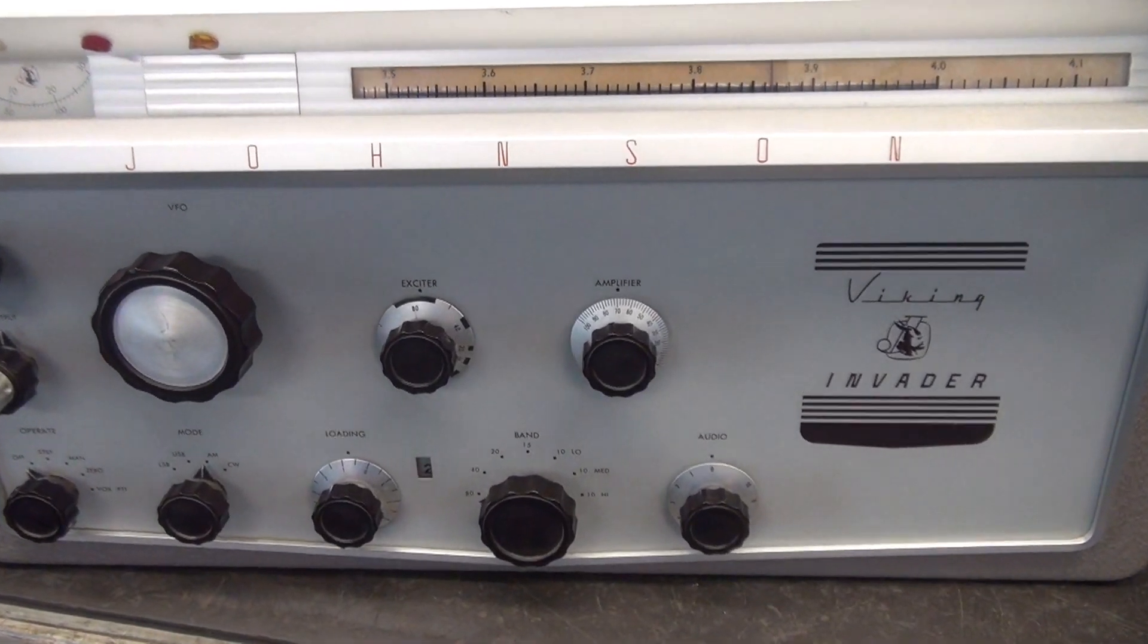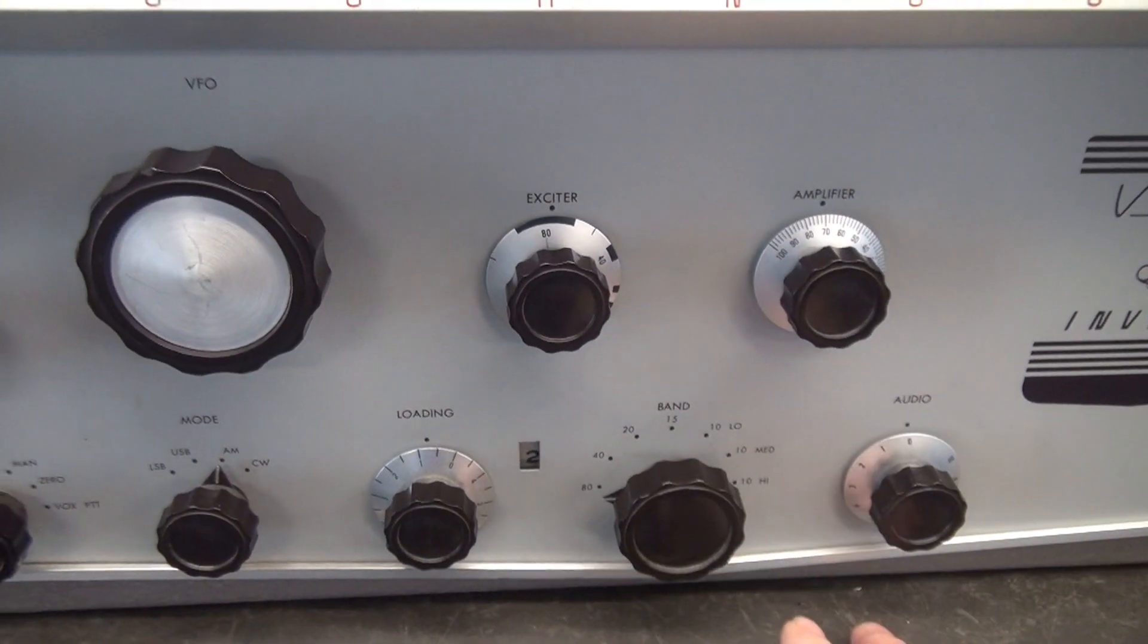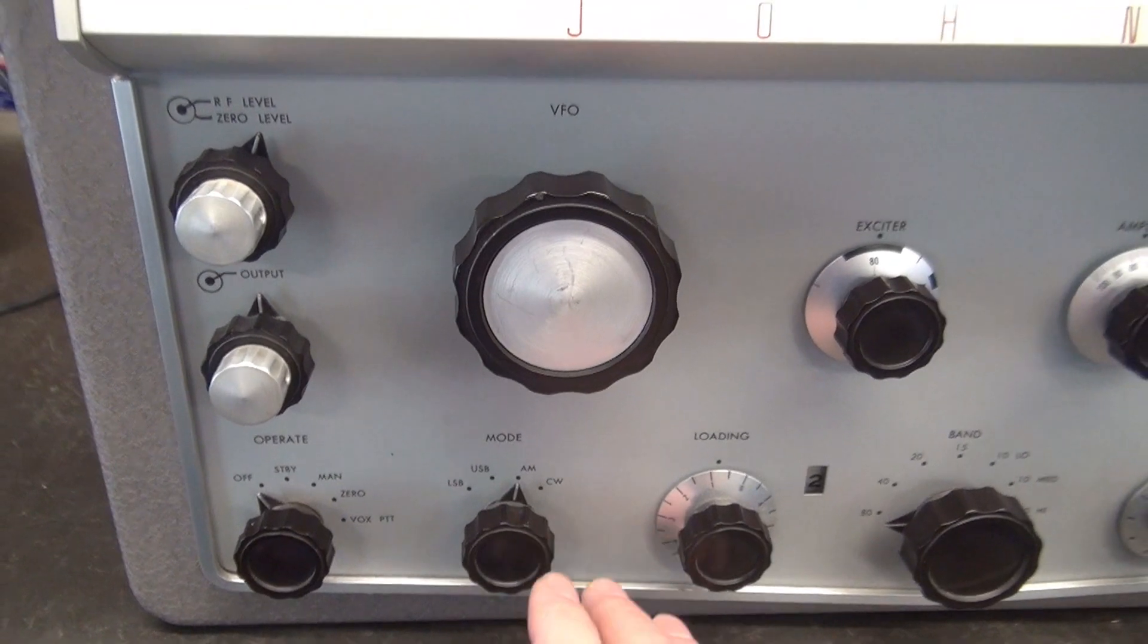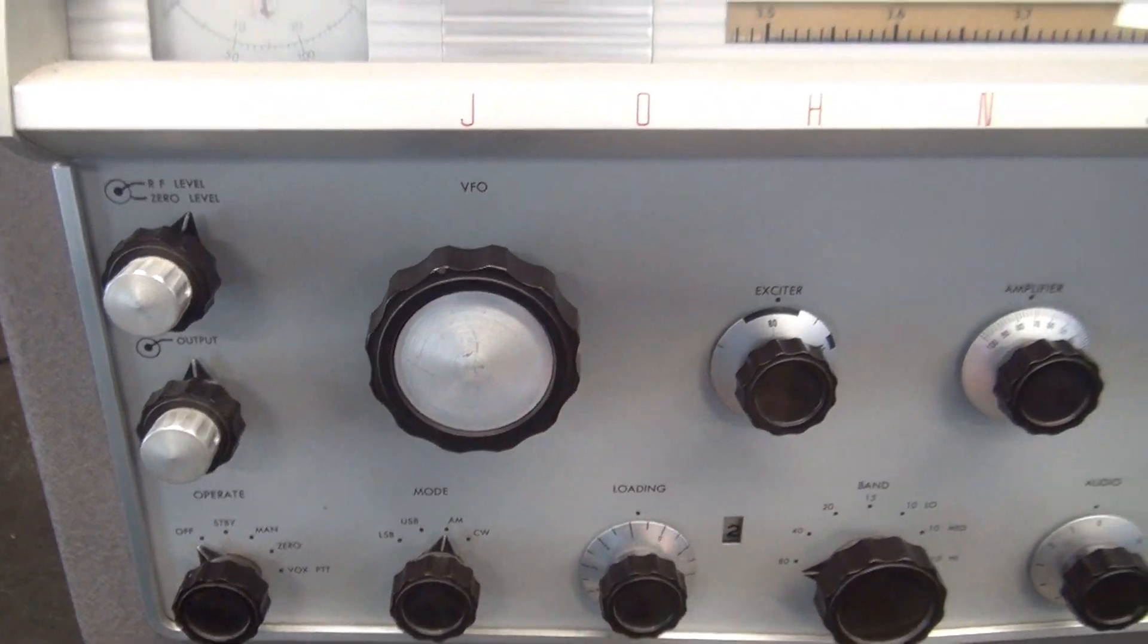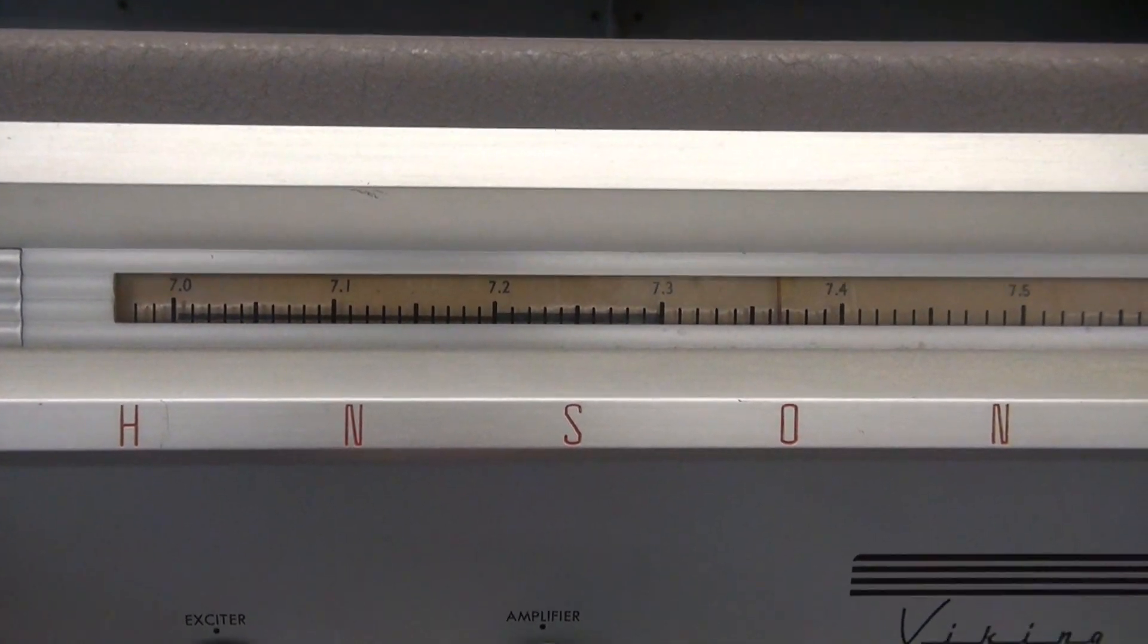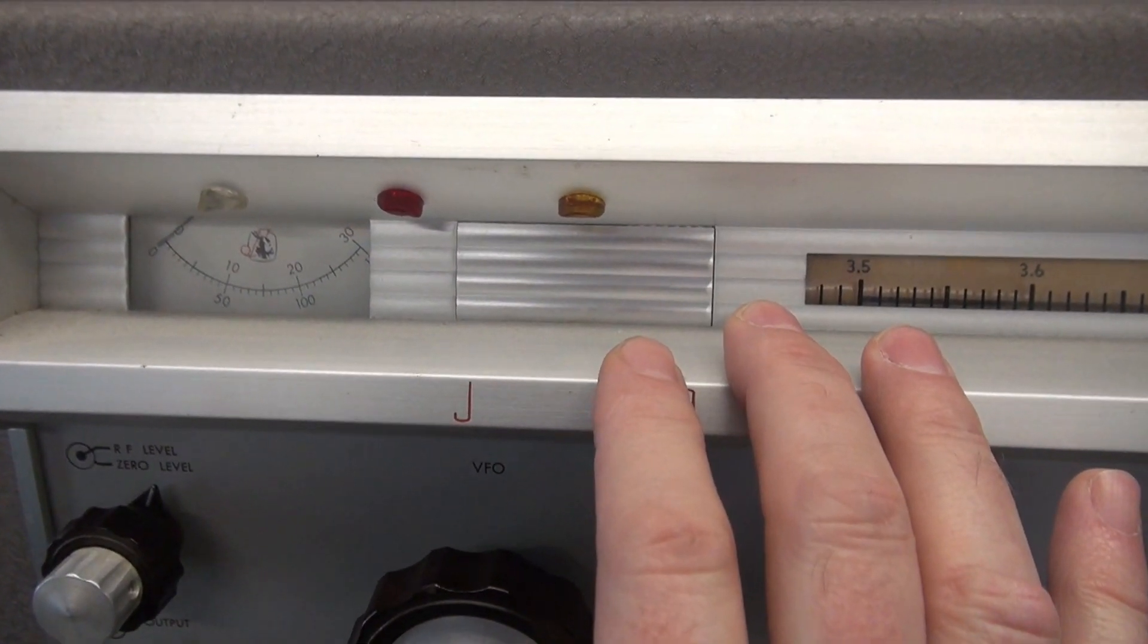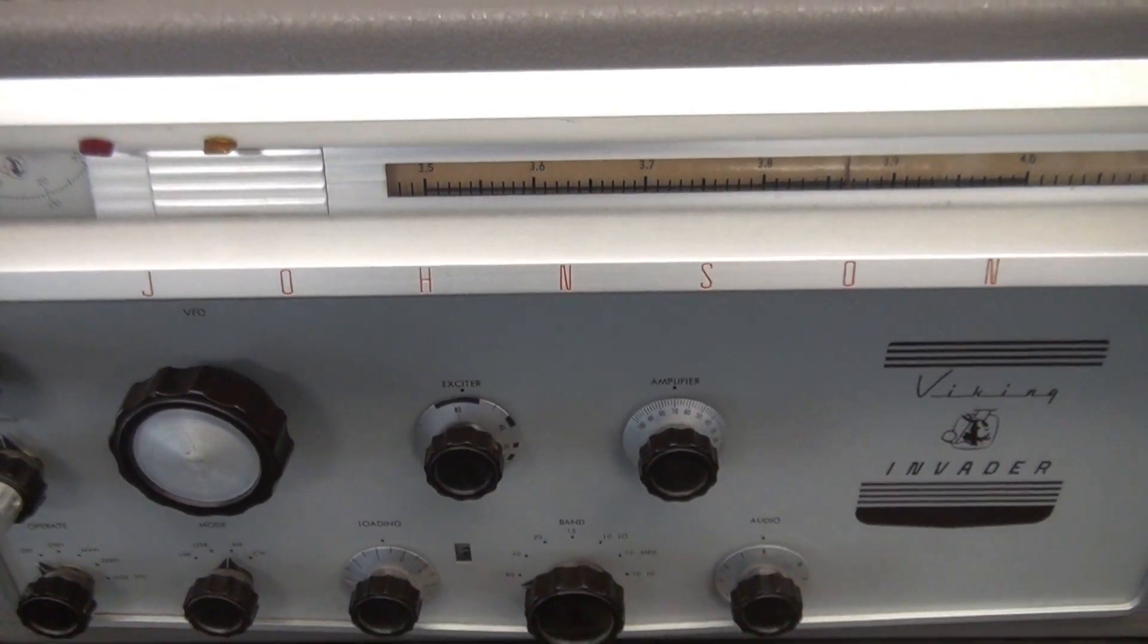So here is the Johnson Invader 200 transmitter. The bands are 80 through 10 meters. Modes are upper and lower side band, AM and CW. I hear they don't do so great on AM, but side band mode and CW is supposed to be a great machine. You got a dial drum here, kind of like what you see on a National 300. Only one meter because this one here was reserved for conversion to the 2000 model, which this obviously is not.